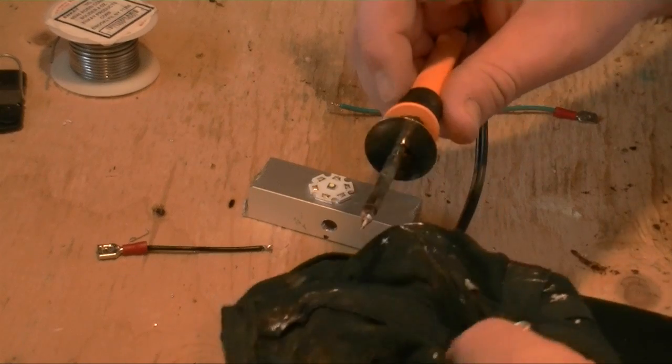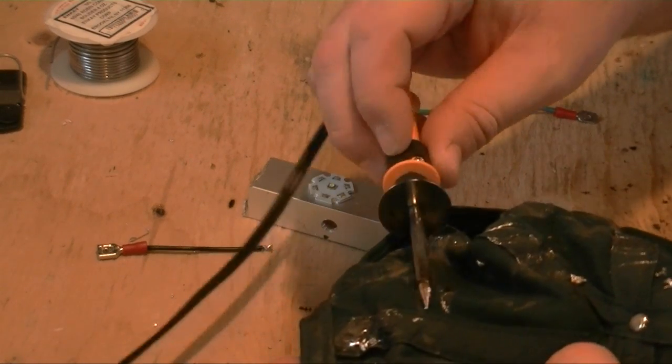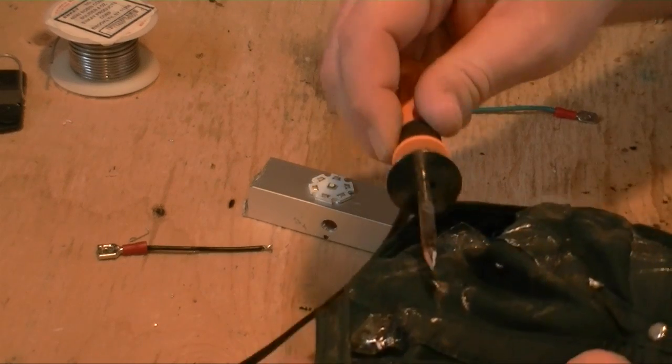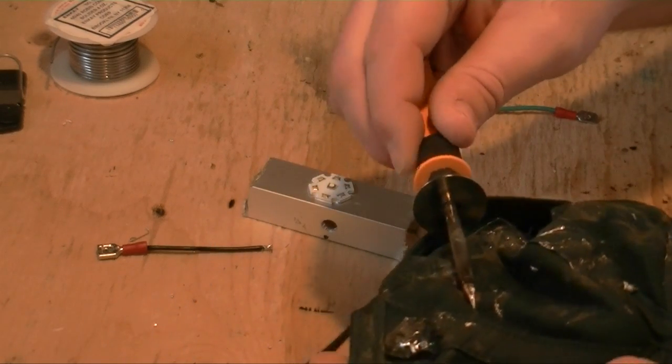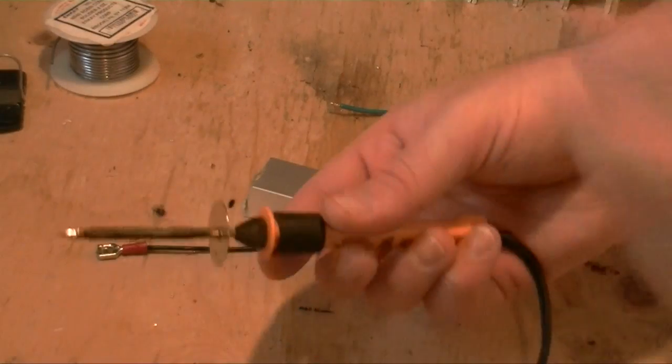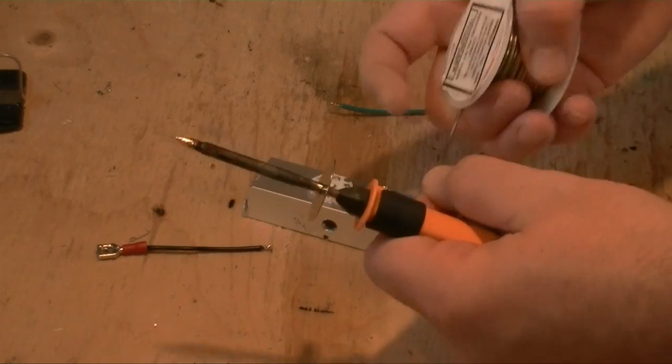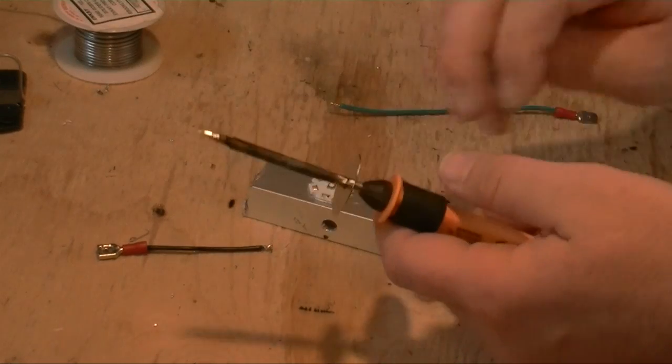I use an old jean hat to wipe off extra solder. So what I just did there that you saw was tinning the tip. Now you have to do that the first time, even before you use it. So look on YouTube for 'tinning soldering iron'.